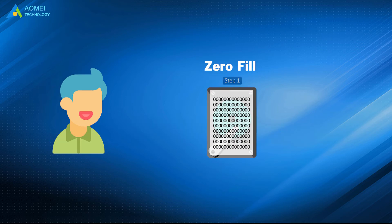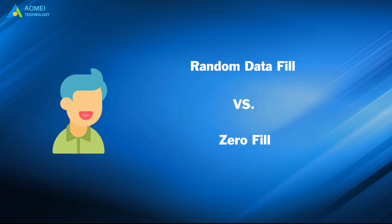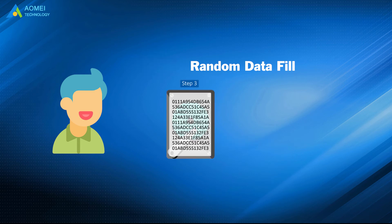Zero fill will override the hard drive with only zeros. It is the most basic way to wipe a hard drive, and it is not safe enough. Random data fill is safer than zero fill, because the random data makes the information more difficult to be recovered.